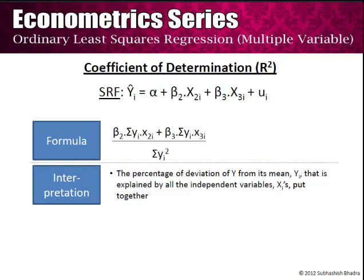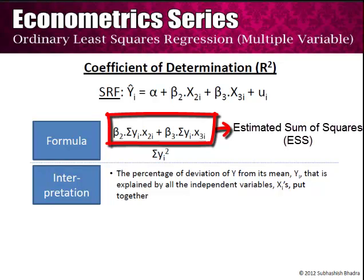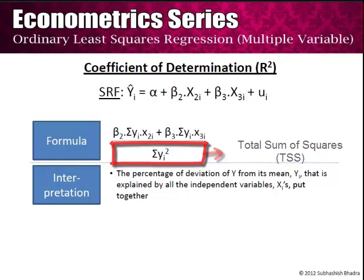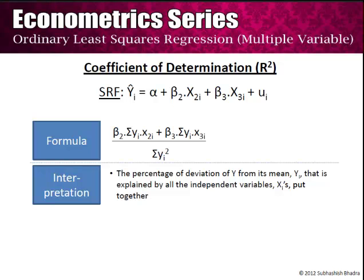As far as the coefficient of determination R-square is concerned, the formula is given by: β₂ into summation of yᵢ·x₂ᵢ plus β₃ into summation of yᵢ·x₃ᵢ, divided by summation of yᵢ². The numerator is the explained sum of squares (ESS). Intuitively, if β₂ increases, i.e. x₂ has a strong relationship with y, then ESS will also increase. The denominator has summation of yᵢ², which is the total sum of squares. The interpretation is that R-square is the percentage of deviation of y from its mean that is explained by all the independent variables put together.